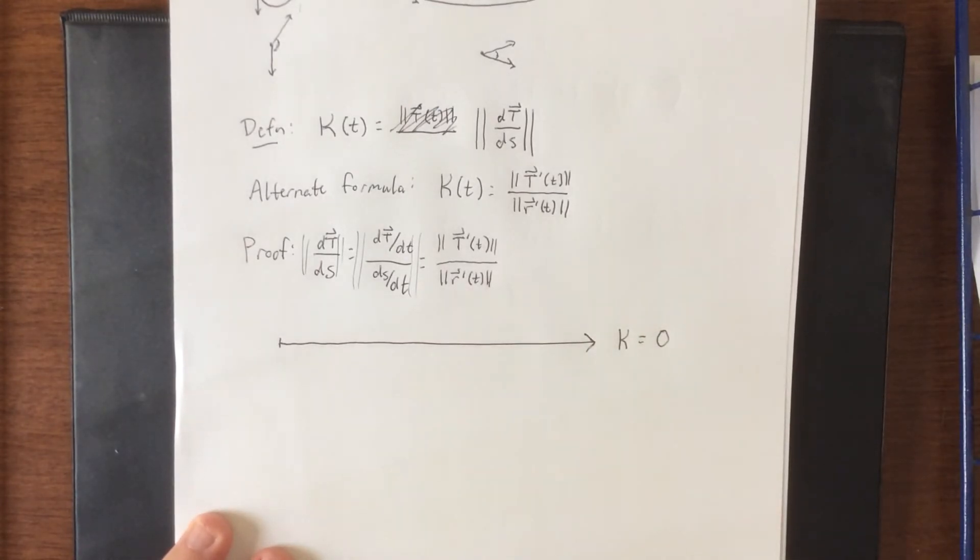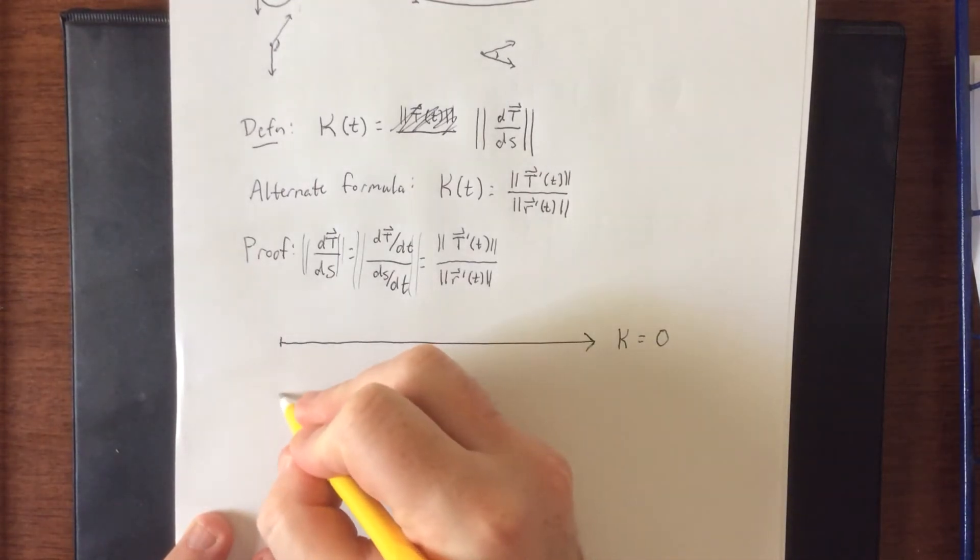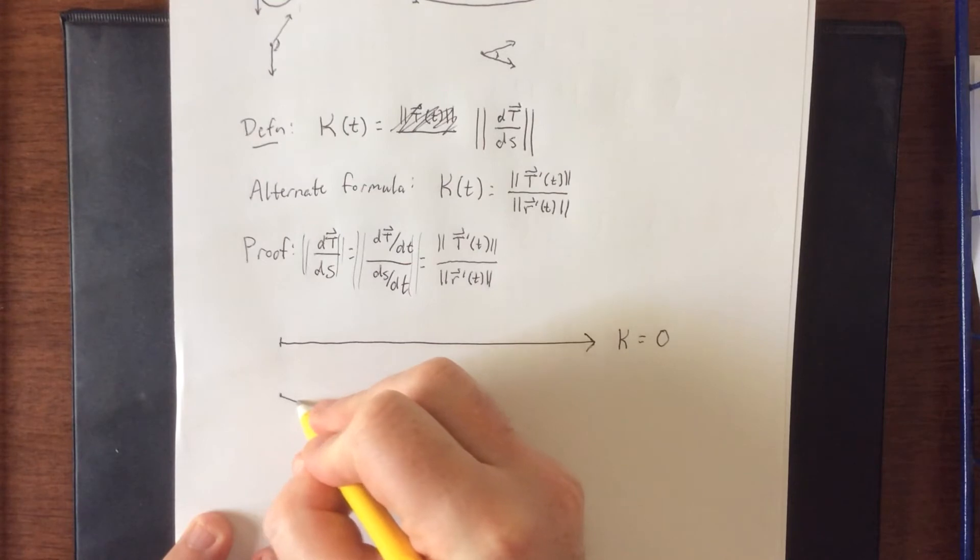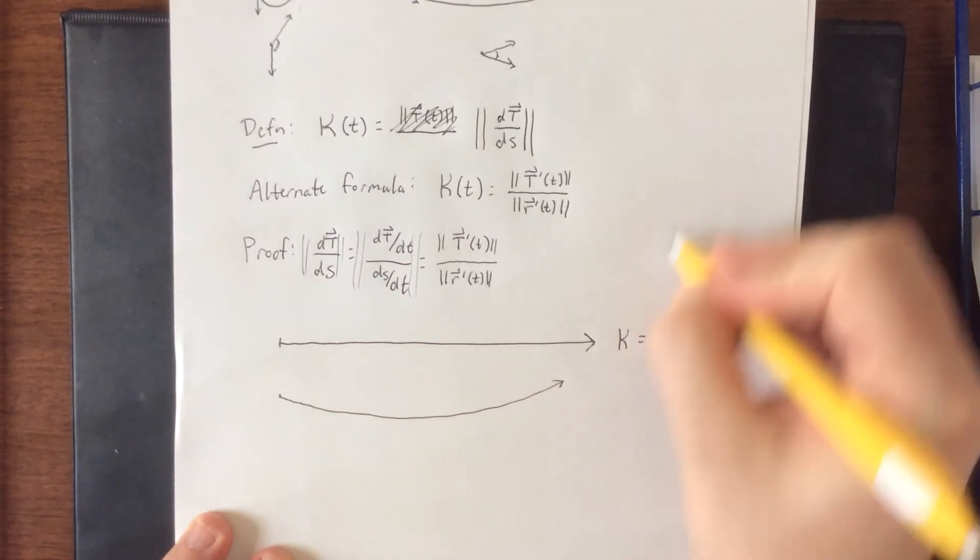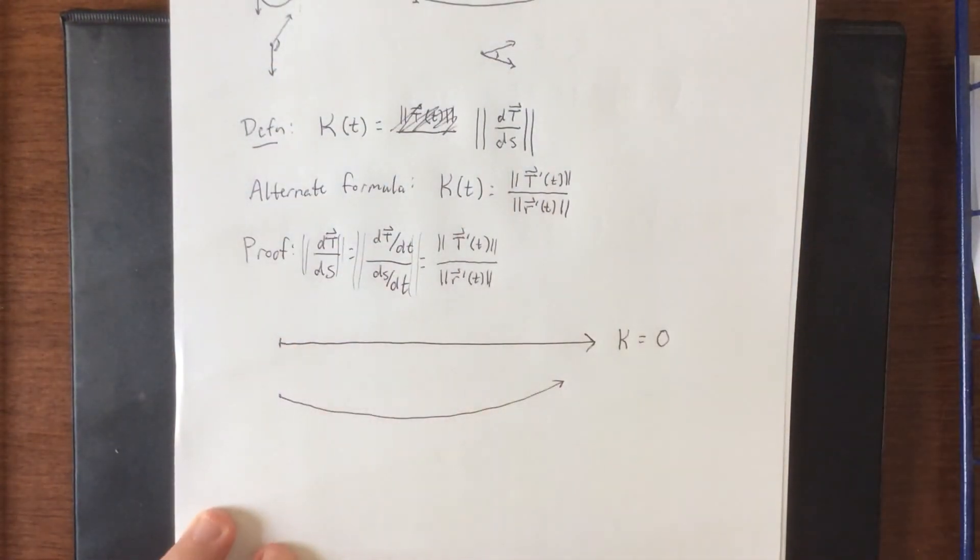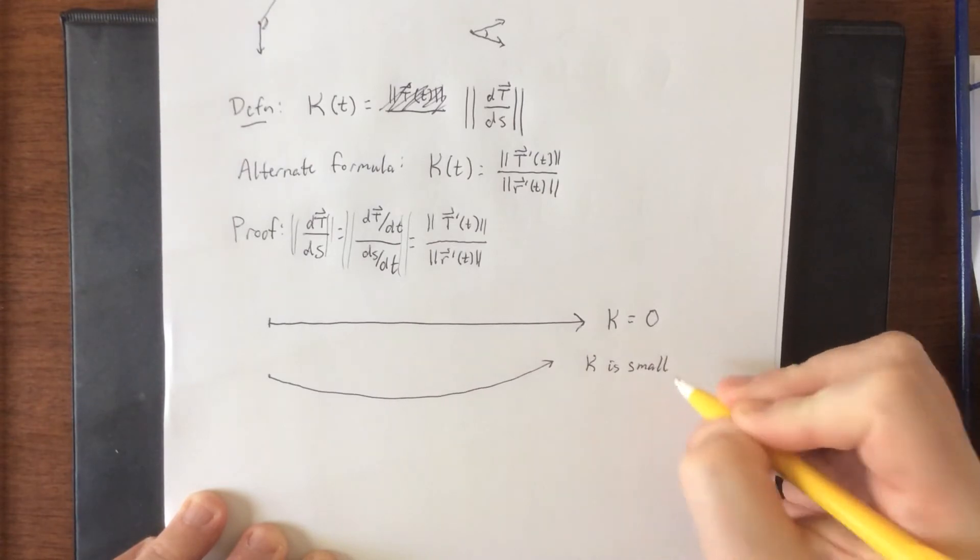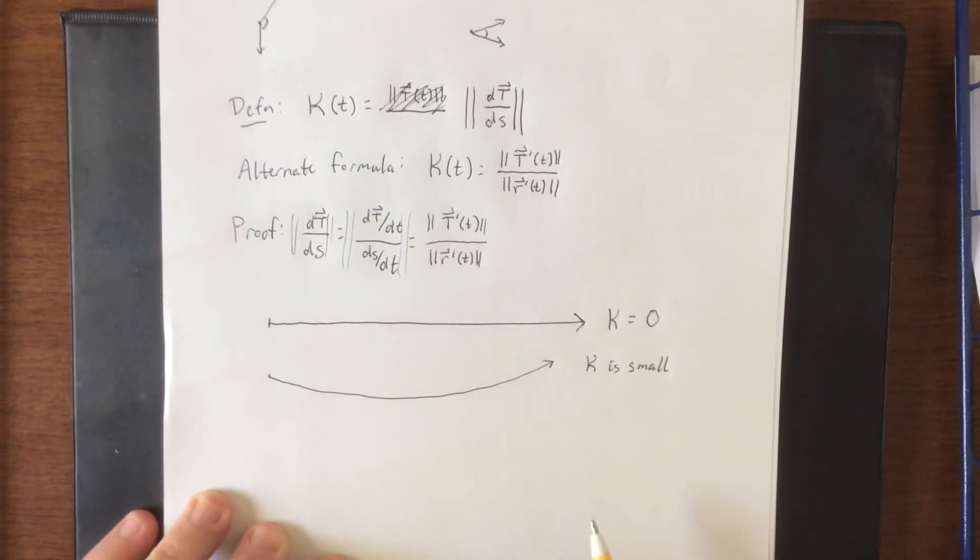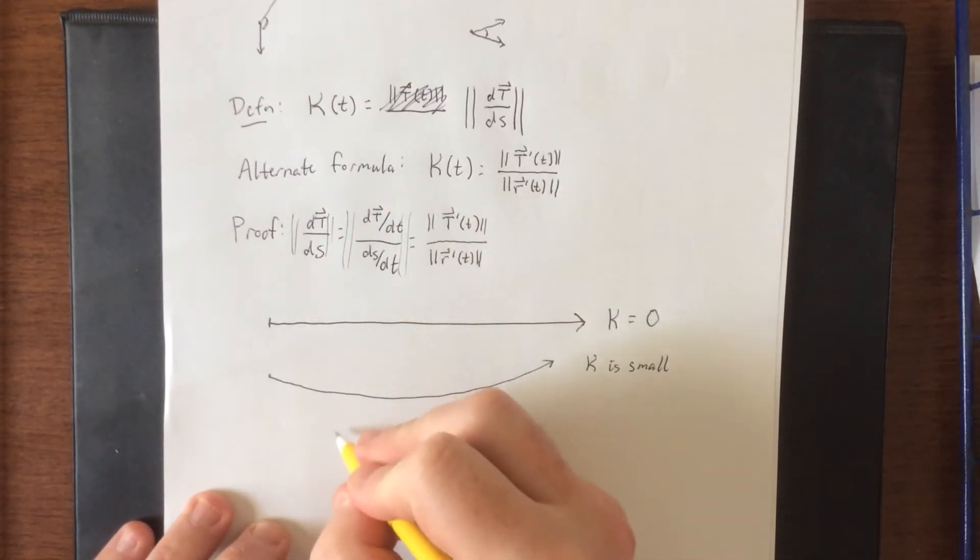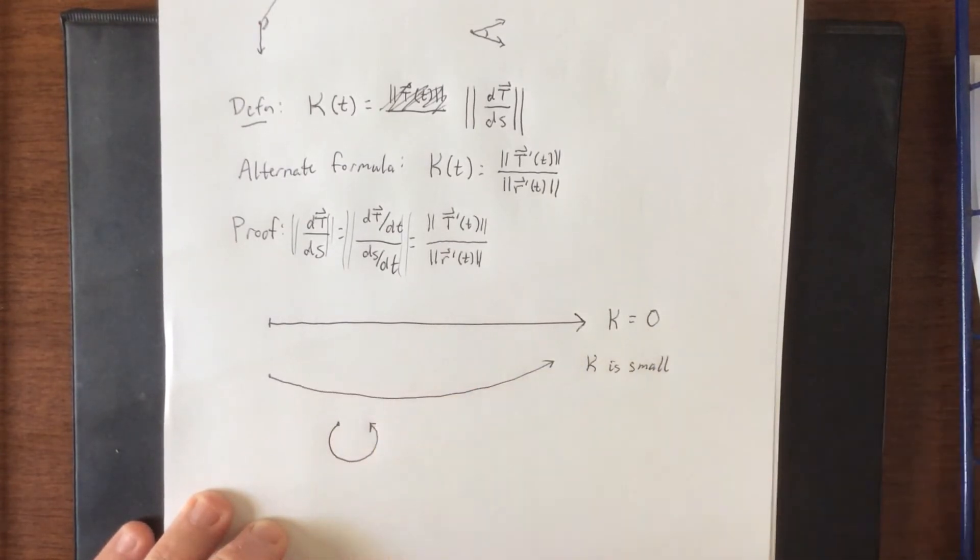Much in the same sense that if you do not turn your steering wheel at all, you will go in a straight line. If you turn your steering wheel ever so slightly, you would be creating a very large circle eventually. This is kappa is small. Whereas if you turn your steering wheel a lot and then drive, you would be making a very small circle, and this is where kappa is large.